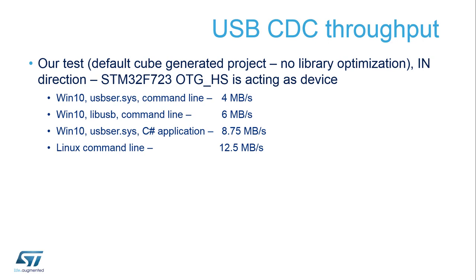To get directly to the results: we tested a project generated by CubeMX without any additional changes in the USB libraries, so both the driver and middleware layer were not changed. For the test we used the STM32F723, which already embeds USB High Speed PHY — the easiest solution for native USB High Speed. We used a USB CDC device application, and all tests were performed on the same PC with a USB 3.0 root hub as host.